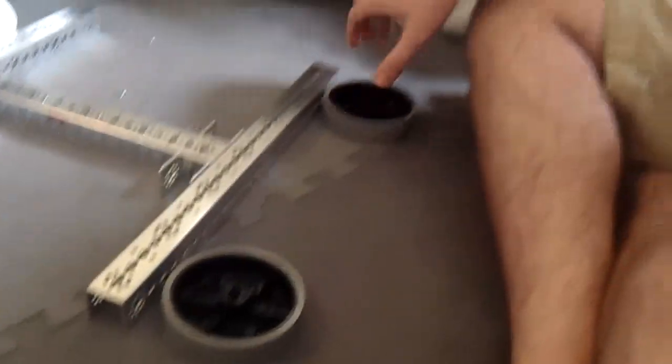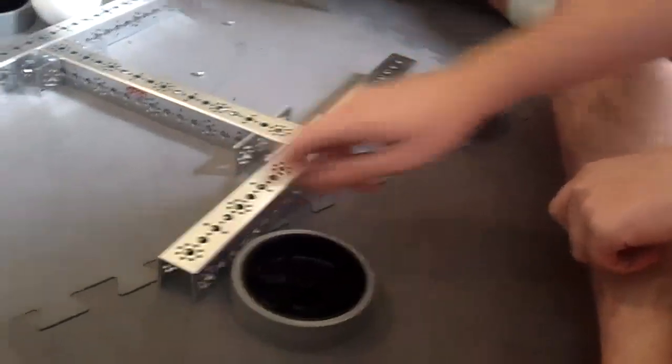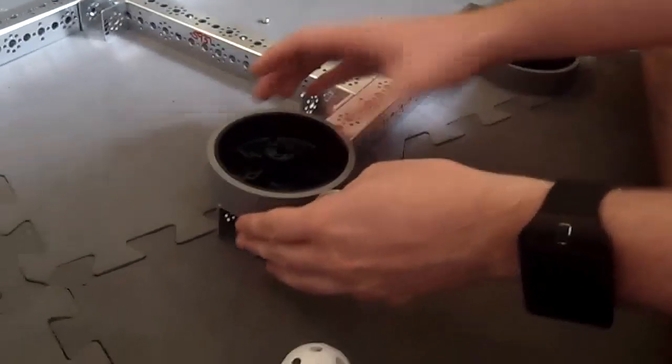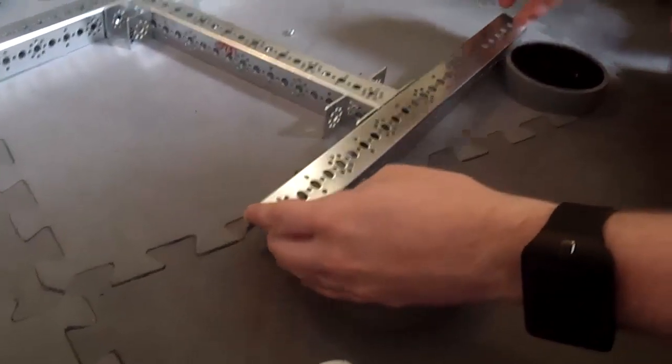Alright, so we're currently working on the drive train. As of right now we're going to go with a four wheel drive with the brand new Andy Mark Stealth wheels on all the corners. We're going to pick this hole because with the four inch motors it's going to keep it right inside the 18 because we're using the 17 and a half inch channel.